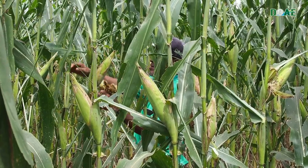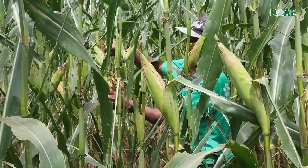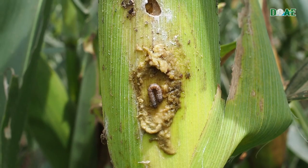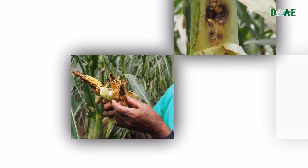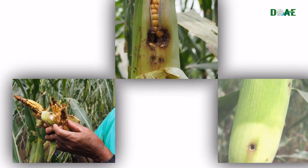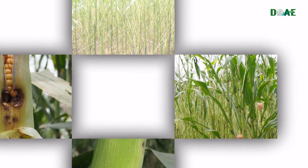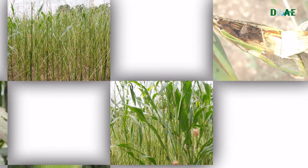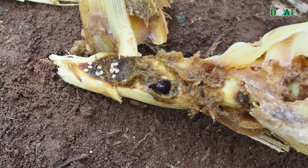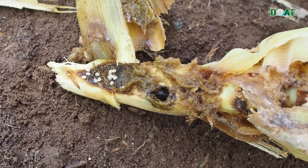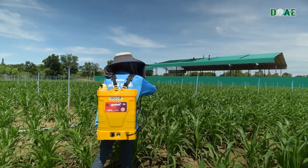If the corn is over 45 days old up to harvesting, fall armyworm normally hides in the ear of corn and causes less damage. As the corn is tall and larvae are hiding in the ear, it is less efficient to use pesticides. Biological control methods such as earwigs, sting bugs, assassin bugs, and Bt are recommended.